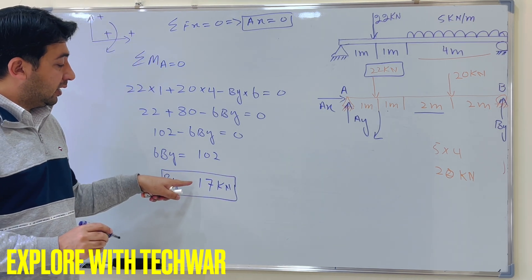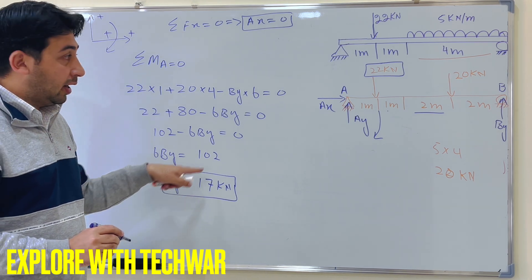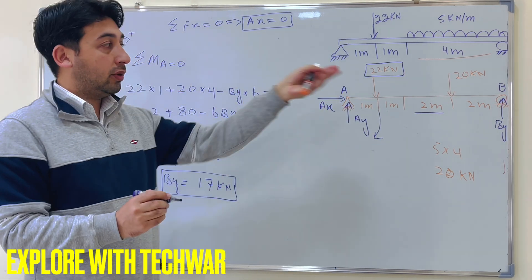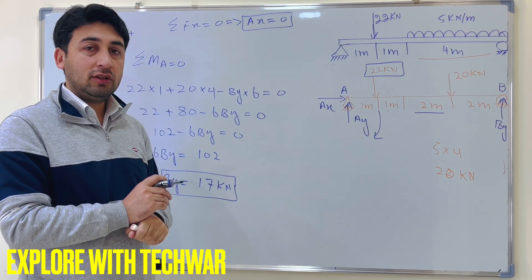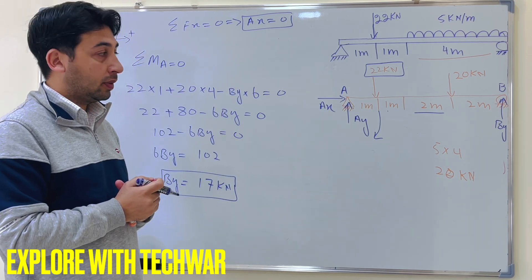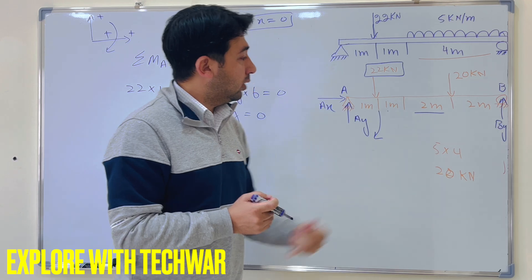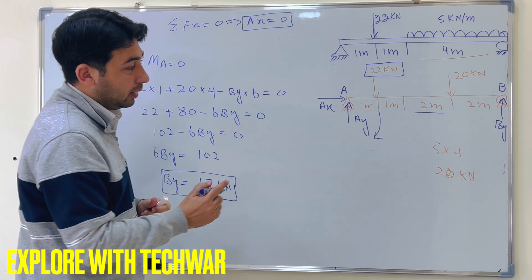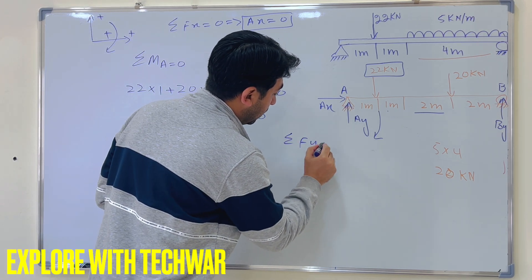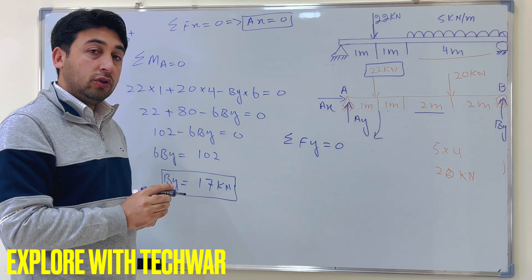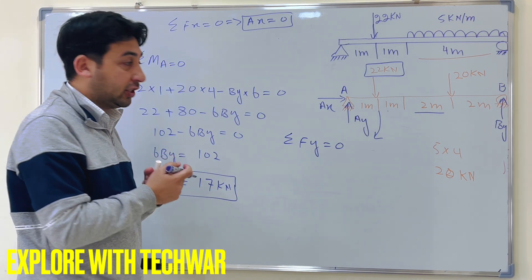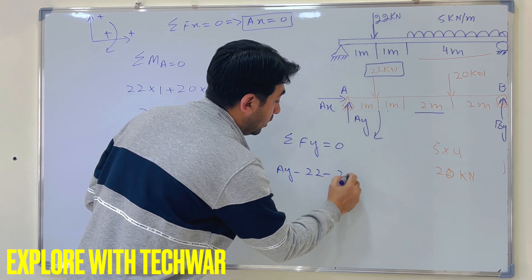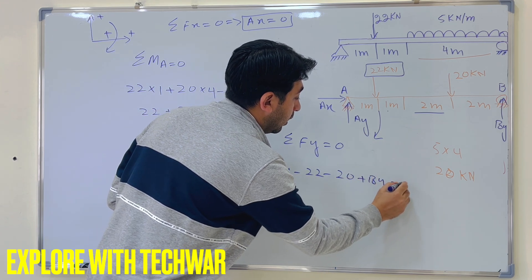BY is 17 kilo Newtons. The positive sign confirms our assumption that BY acts upward is correct. To find AY, we apply the sum of all forces in the Y direction equals zero. The forces in the Y direction are AY (upward), minus 22, minus 20, and plus BY.